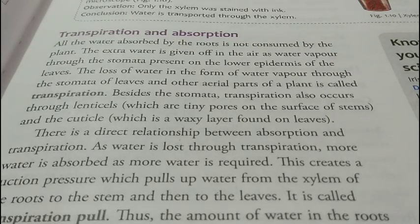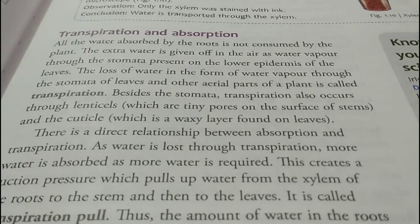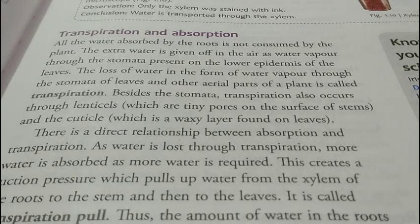पत्तों से water ज़्यादा release हो जाने की वजह से leaves सूख जाती हैं और folded हो जाती हैं — इस process को wilting कहते हैं। So, drooping down of the leaves due to more transpiration is called wilting — मुरझा जाना। अपने next video में हम factors affecting the rate of transpiration पढ़ेंगे और समझेंगे कि कौन से factors transpiration rate को प्रभावित करते हैं।